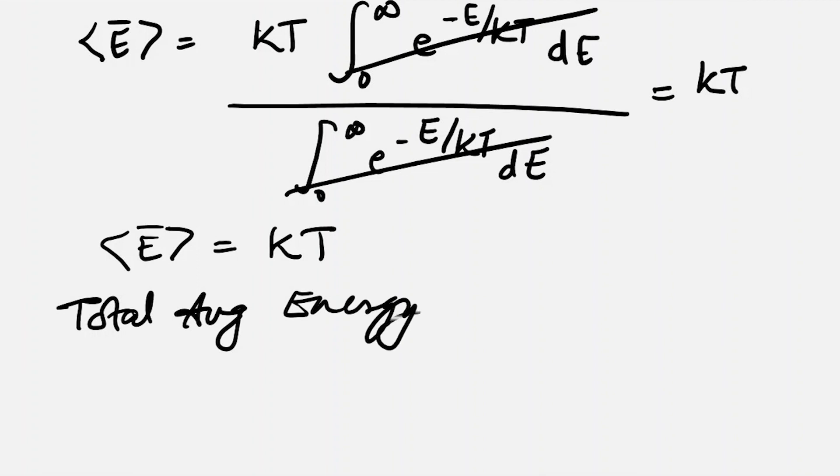So the total average energy is 3N times kT. Now we have to find CV, the heat capacity at constant volume, which comes out to be dE by dT, where total energy is 3NkT. So this is 3Nk.